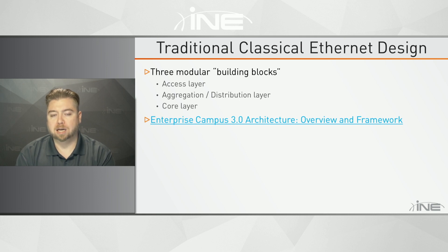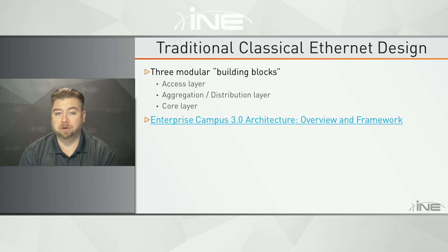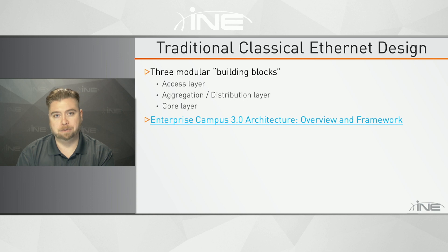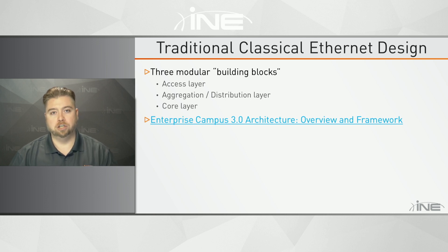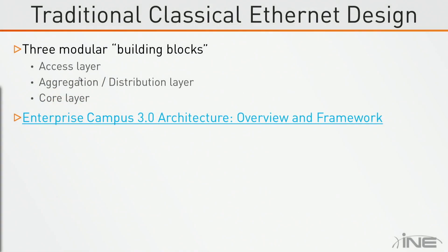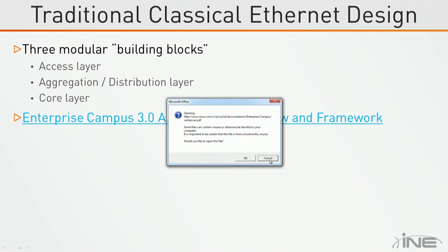I'm not going to spend a ton of time on the background, but for those not very familiar with it, I'd recommend looking at the Campus Enterprise Architecture — what used to be called the Gigabit Campus Network Design Guide. It's part of the Cisco Solution Reference Network Design Guides, the SRNDs, or what's now called the Cisco Validated Designs, the CVDs — essentially design recommendations for building the campus network.